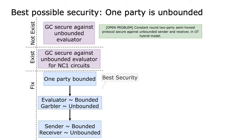Note that in order to build a four-round two-party protocol, we require a three-round oblivious transfer protocol that is also statistically secure against a malicious OT sender. Using garbled circuits, we can already obtain a round-optimal semi-honest protocol that is secure against bounded adversaries. However, for the unbounded case, the garbled circuit protocol that is secure against an unbounded evaluator only exists for NC1 circuits. In fact, constant-round two-party semi-honest protocol that is secure against unbounded sender and receiver in the OT hybrid model is still an open problem. Therefore, the best we could hope for is a protocol in which only one party is unbounded.